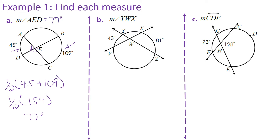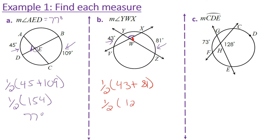In example 1b, we want to find the measure of angle YWX. We're not given the arcs we need directly, but we're given arc YV and arc XZ, so we can use those to find a related angle. One-half of 43 plus 81 gives us 124, and half of that is 62.